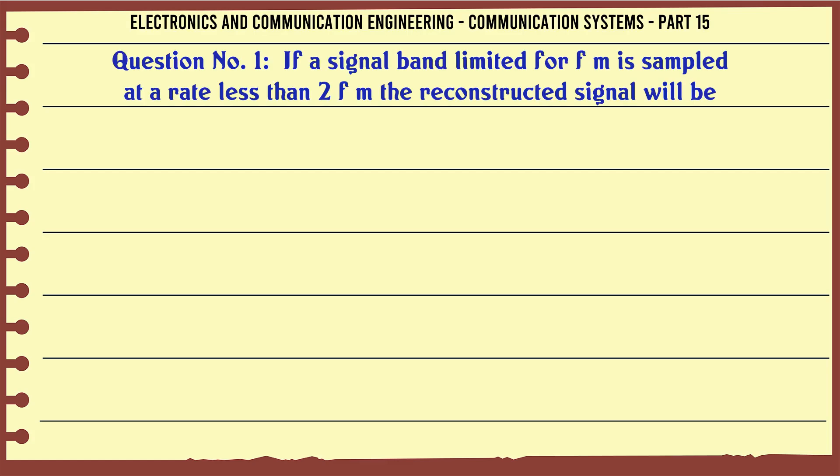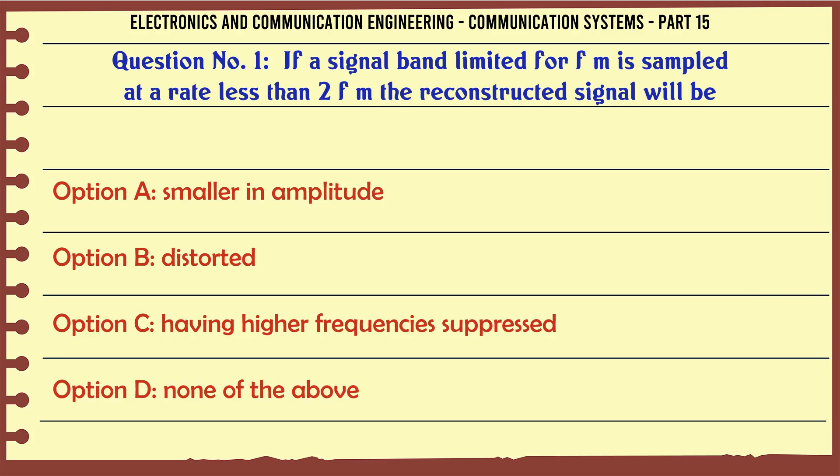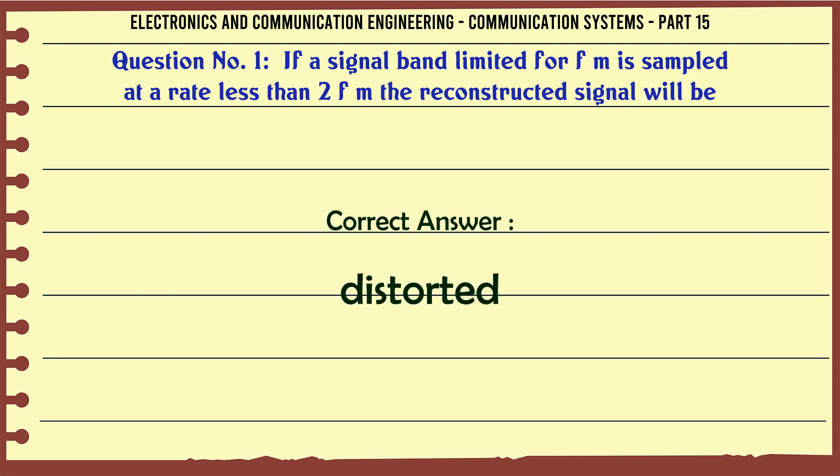If a signal band limited for fm is sampled at a rate less than 2 fm the reconstructed signal will be: a smaller in amplitude, b distorted, c having higher frequencies suppressed, d none of the above. The correct answer is distorted.